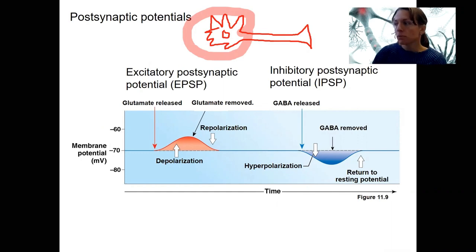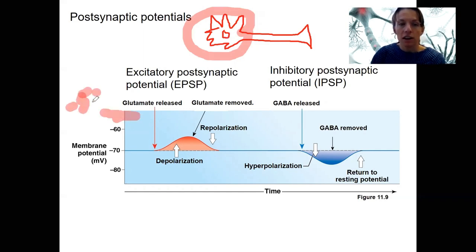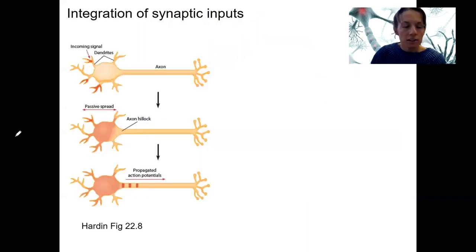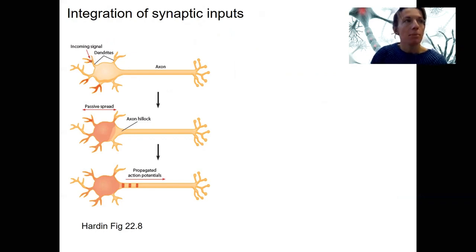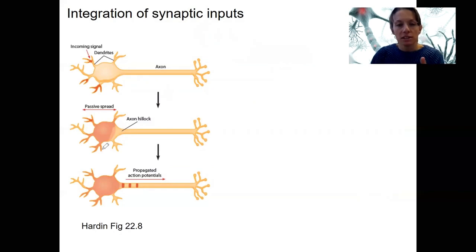The axon itself is not stimulated — these incoming signals are at either the dendrites or cell body. How do we get an action potential? These sum together to reach threshold, about minus 50 to minus 55. Here is a schematic of incoming signals that passively spread — that's a characteristic of graded potentials. These incoming IPSPs and EPSPs passively spread and may or may not reach the axon hillock. The axon hillock is the beginning of the axon where, if you reach threshold, an action potential is generated.